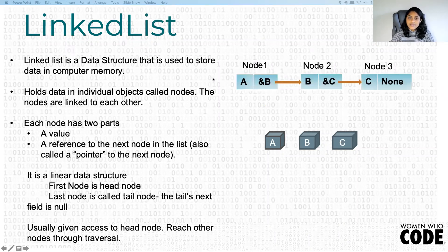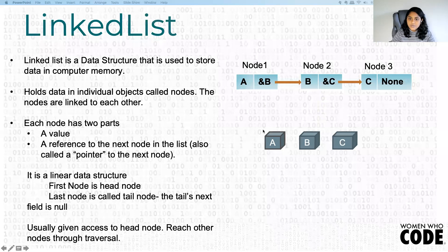A node has a value and a reference. The reference refers to the next node in the linked list. So why does it have a node and a value — what is so special about linked list versus an array that has just a value? Let's give a quick overview about that.